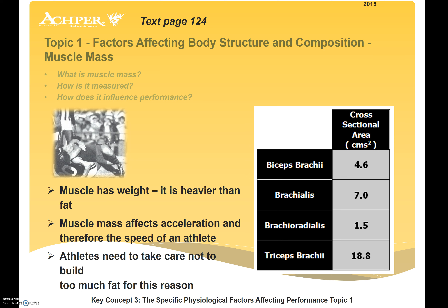Looking at muscle mass as a factor affecting body structure and composition. What is muscle mass, how is it measured, and how does it influence performance? Muscle has weight - it's heavier than fat and that often affects our BMI ratings. It affects acceleration and therefore the speed of an athlete, because greater muscle mass allows us to perform greater contractions. However, care needs to be taken not to build too much muscle mass.